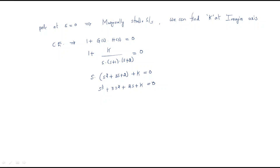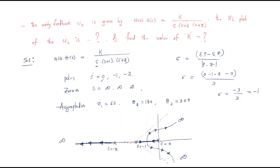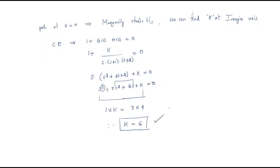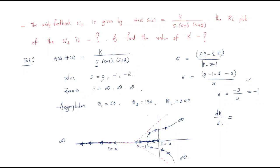This is a third-order system. Using the Routh-Hurwitz stability condition, we apply the rule that the inner product equals the outer product: 1 × K = 3 × 2, therefore K = 6. So the value of K at the imaginary axis is 6. Additionally, we can find the breakaway point by computing dK/ds = 0, which should lie between 0 and −1.